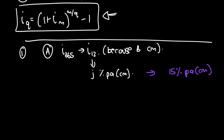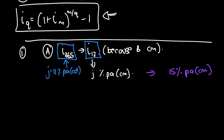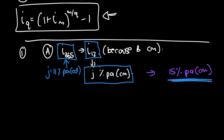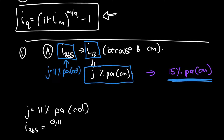The idea is: take Institution A's original nominal rate — J equals 11% per annum compounded daily — convert it to its effective interest rate, then convert that to the equivalent effective interest rate compounded monthly, and finally convert to the nominal interest rate representing monthly compounding. That way we can directly compare it to Institution B's nominal rate.